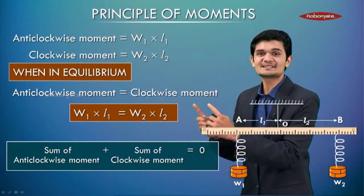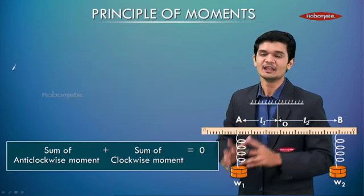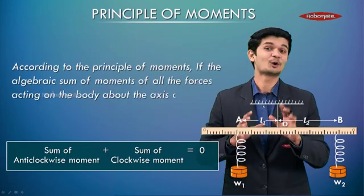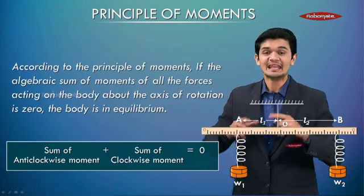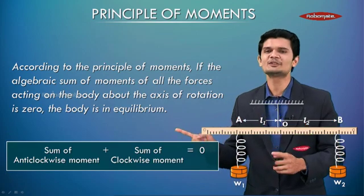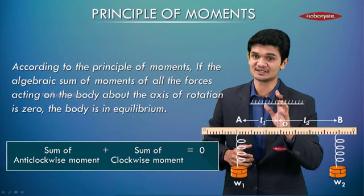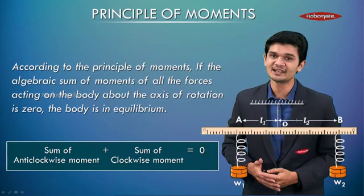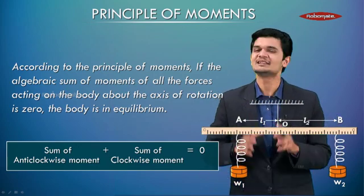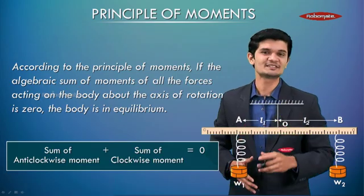So do you notice over here an algebraic sum equals to zero. So in simple terms I can say that according to the principle of moments, if the algebraic sum of the moments of all the forces acting on the body about the axis of rotation is zero, then we can say that the body is in equilibrium. And this was your basic understanding of the principle of moments.